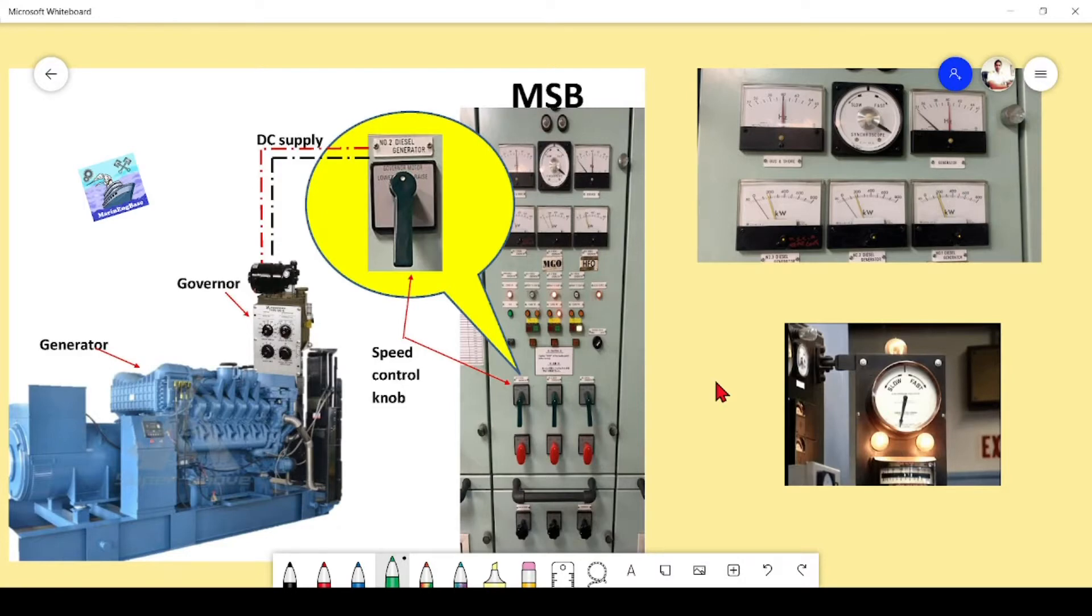From here onwards we are going to discuss the procedure of paralleling practically with smooth operation. As a start, I will explain this diagram. Here we can see the MSB, this is the realistic view of main switchboard of a ship. The top six panels are here and the most important part is the synchroscope.